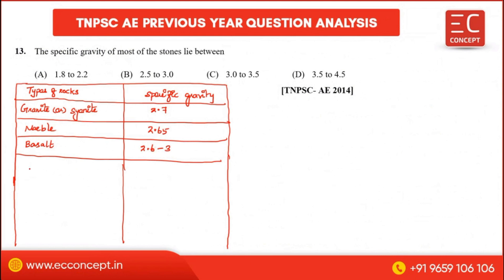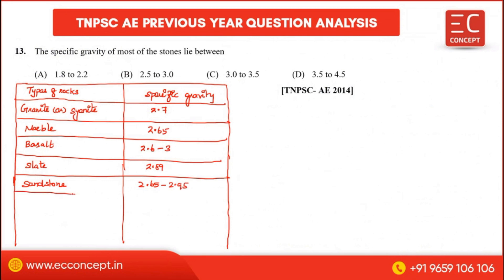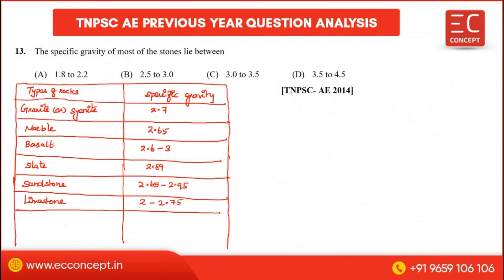Quartzite and slate have a specific gravity of about 2.89. Sandstone ranges from approximately 2.65 to 2.95. Limestone has a specific gravity of around 2.5.